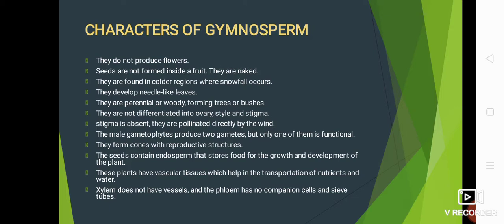The male gametophyte produces two gametes, but only one of them is functional. They form cones as a reproductive structure. The seeds contain endosperm that stores food for the growth and development of the plant. These plants have vascular tissues that help in the transportation of nutrients and water. There are two types of vascular tissues: xylem and phloem. Xylem does not have vessels, and phloem has no companion cells and sieve tubes.